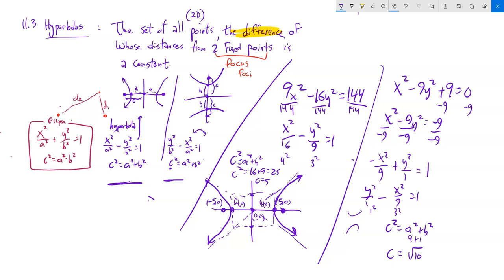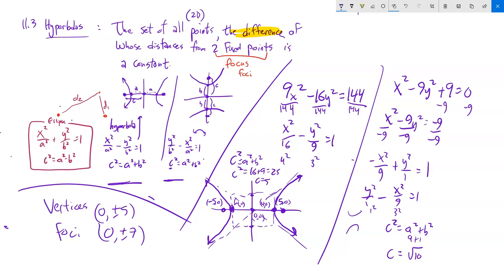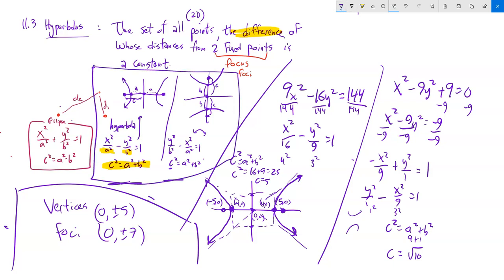In the homework, I'll ask you to sketch hyperbolas and also work backwards from given information — for example, if vertices are at (0, ±5) and foci are at (0, ±7), find the equation. You have enough information: use the a and b values and the relationship c² = a² + b² to write the equation. Post any questions you have.